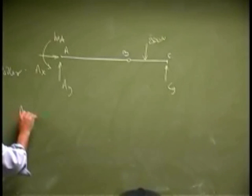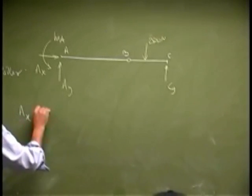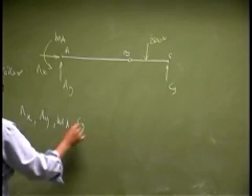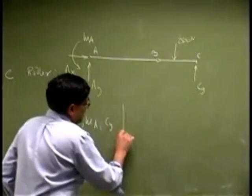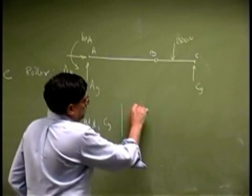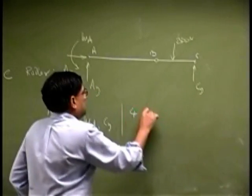And again, we look at the unknowns here, you have AX, AY, MA, and CY, so that gives you basically four unknowns.